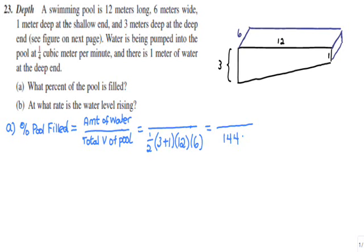Now for the amount of water — let's fill the pool with one meter of water at the deep end. That water shape looks like a triangle on the two-dimensional face. The base of that triangle is the 1-meter depth, but the horizontal distance across the top of the water is something we do not know. I'll call it H to signify the horizontal width of the triangle.